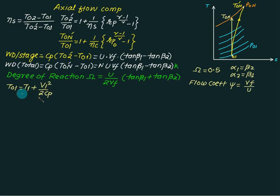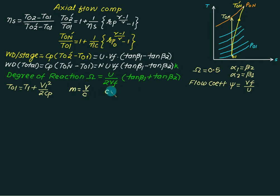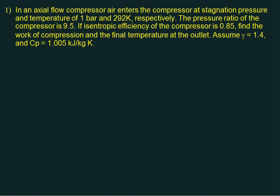Blade velocity U is given by πDN divided by 60. Stagnation temperature T01 and static temperature T1 are related by T01 = T1 + V1² divided by (2cp), which is the conversion from static to stagnation temperature. Mach number is defined as V divided by c, where c is the speed of sound equal to the square root of (γ × R × T), with T as the static temperature.